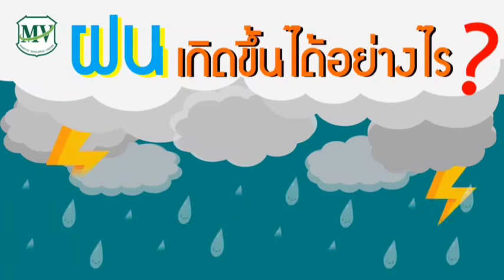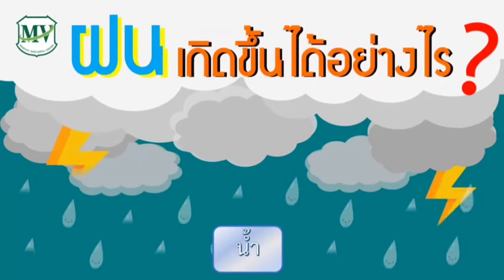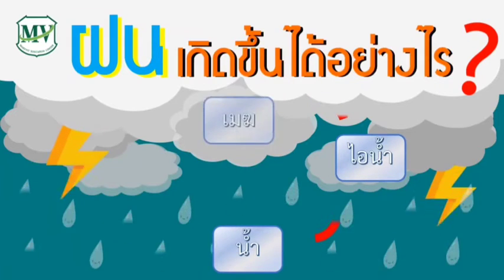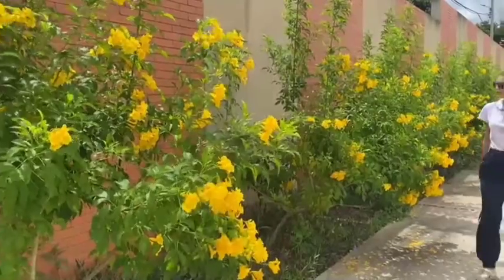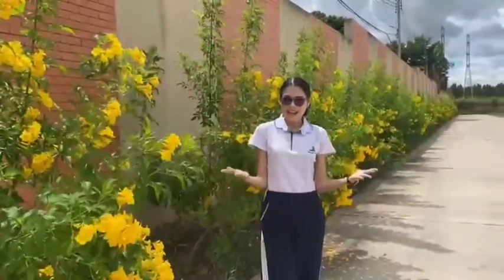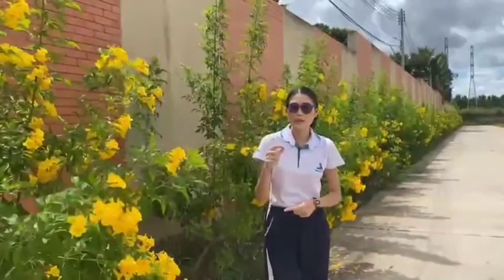ดังนั้น เราก็ทราบแล้วว่าฝนเกิดขึ้นได้อย่างไร ฝนเกิดจากน้ำระเหยกลายเป็นไอน้ำ ลอยขึ้นสู่ชั้นบรรยากาศ รวมตัวเป็นก้อนเมฆ เกิดการควบแน่นกลายเป็นหยดน้ำ ตกลงมาเป็นฝนสู่พื้นผิวโลก ซึ่งจะหมุนเวียนเป็นวัฏจักรของน้ำที่ทำให้เกิดฝนค่ะ